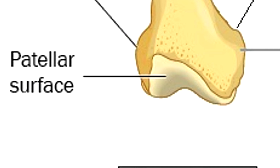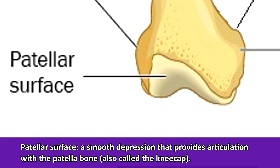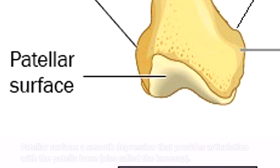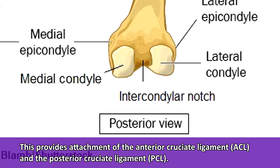Looking at the anterior or front side of the femur, you'll notice down at the inferior portion the patellar surface, which is a smooth depression that provides articulation with the patella bone — also known as your kneecap. On the posterior side of the femur, there is a notch separating the medial and lateral condyles — the prefix inter means between, and condylar refers to condyles — so this is the intercondylar notch between those condyles. It provides attachment of the anterior cruciate ligament (ACL) and the posterior cruciate ligament (PCL).